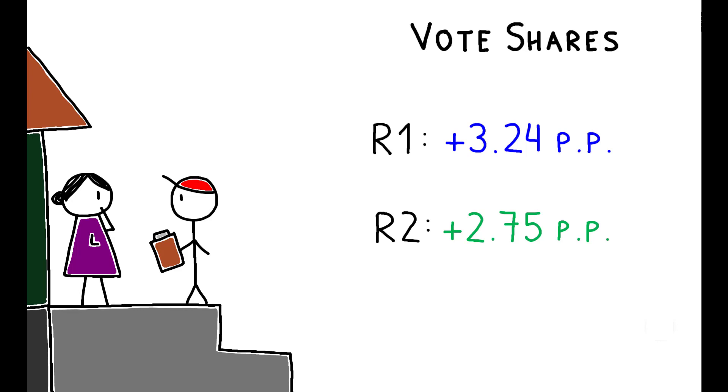Scaling these results by the total number of doors knocked as part of the broader field campaign, the author estimates that canvassing accounted for approximately one half of Hollande's lead in the first round of the election and one fourth of his victory margin in the second.